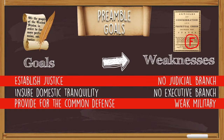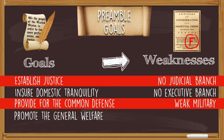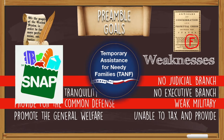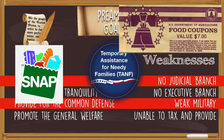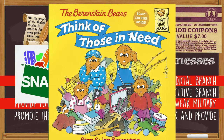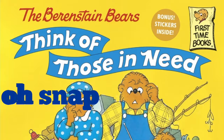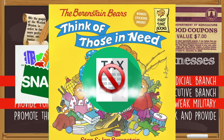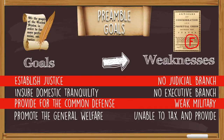Next is promoting the general welfare. Welfare means your well-being, and that's a fantastic goal for a government — to help people in need. Things like TANF, Temporary Assistance for Needy Families, and SNAP, which we used to call food stamps, are all for the general welfare. Under the Articles, the government was unable to do this mostly because they could not collect taxes, and without taxes we really don't have social programs to help others.